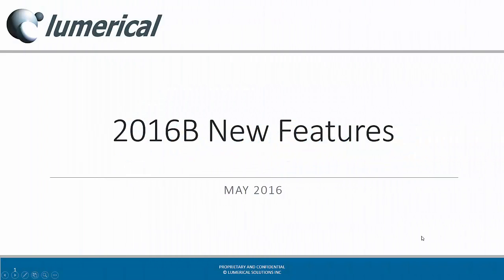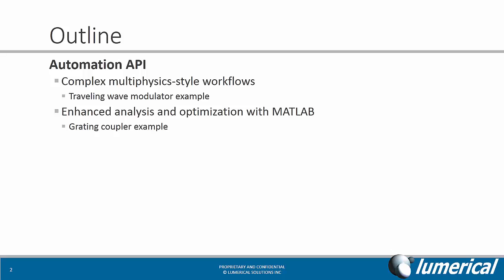This video introduces the new features for Lumerical's 2016B release, which is available as of May 2016 and can be downloaded from our website. The 2016B release introduces an automation API that enables automation of workflows involving Lumerical's products as well as with third-party products. This allows users to define very complex, multi-physics style workflows, and we will illustrate this with the Traveling Wave modulator example.